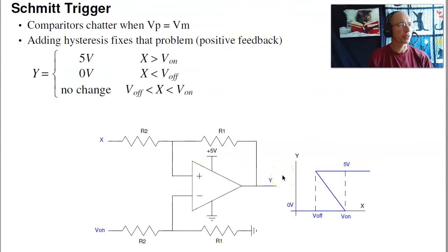Next, we'll look at Schmidt triggers. A comparator turns on and off at a single voltage. Sometimes you don't want to do that. For example, in the sunroom, I might want to open the door when it gets above 70 degrees and close it when it gets below 60. That hysteresis helps keep the motor from chattering on and off. To do that, I use a Schmidt trigger.